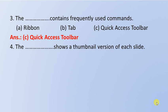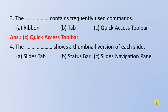Next question: Which option shows a thumbnail version of each slide? Option A: Slide Tab, Option B: Status bar, Option C: Slide Navigation Pane. The right answer is Option C: Slide Navigation Pane.